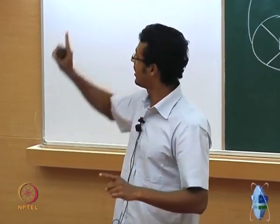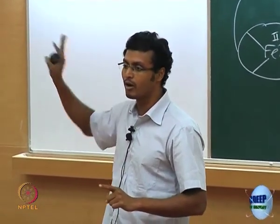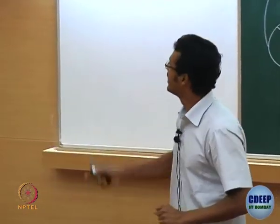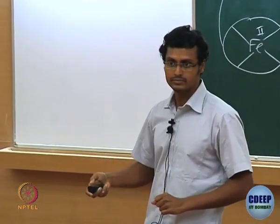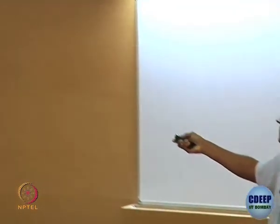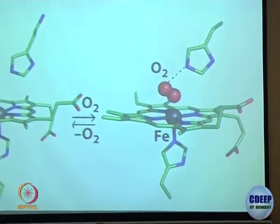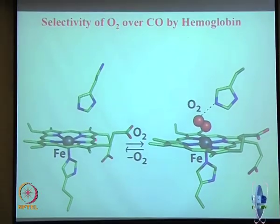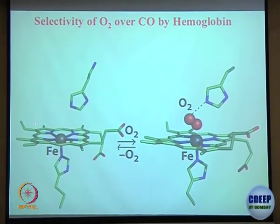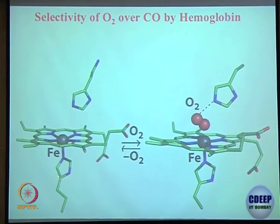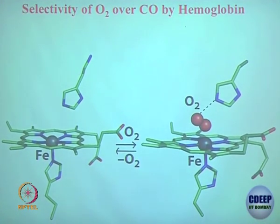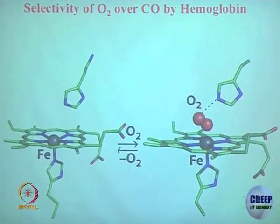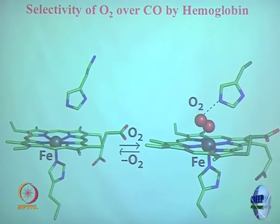What is cooperativity? I will explain very briefly. The moment one of the oxygens binds — how it binds — it binds at the iron porphyrin site. This is imidazole, and that is deoxyhemoglobin where no oxygen is there. This is the other histidine I am talking about over here, which is far.